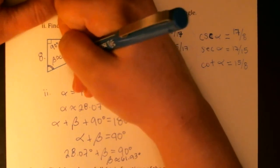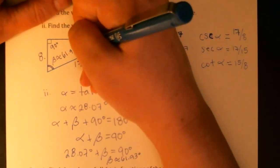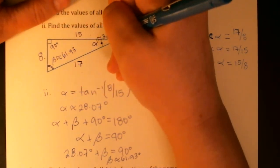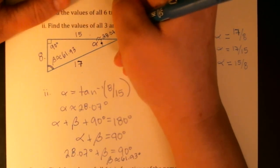So beta is about 61.93 degrees. So up here, 61.93. And alpha is 28.07 approximately.